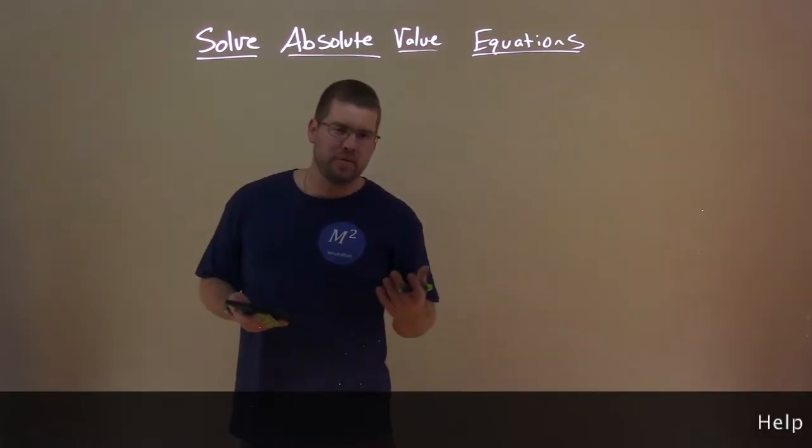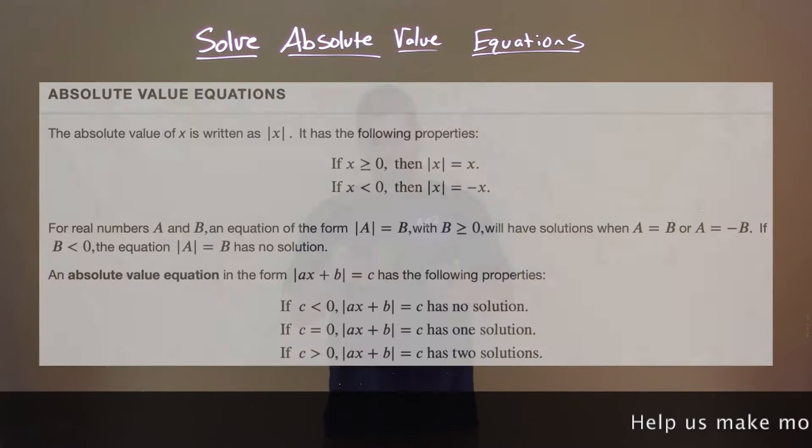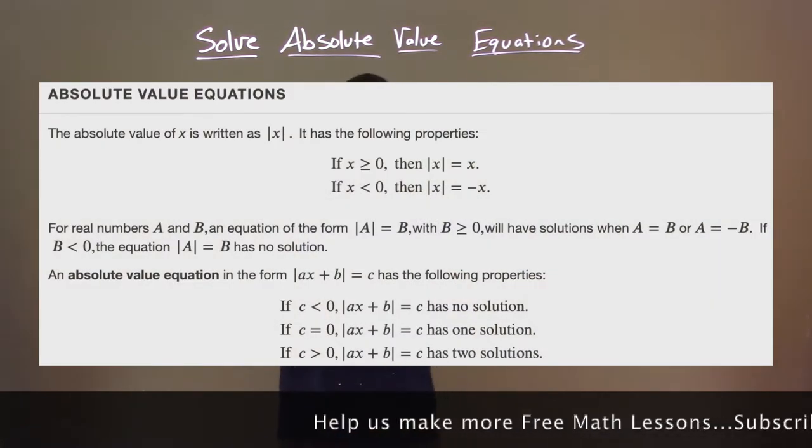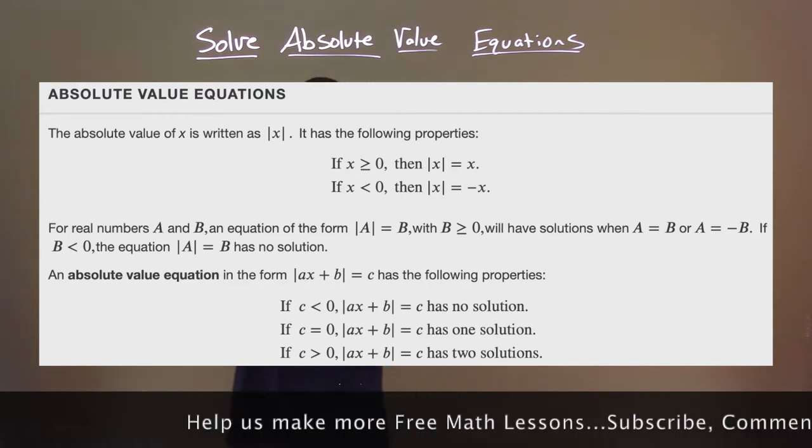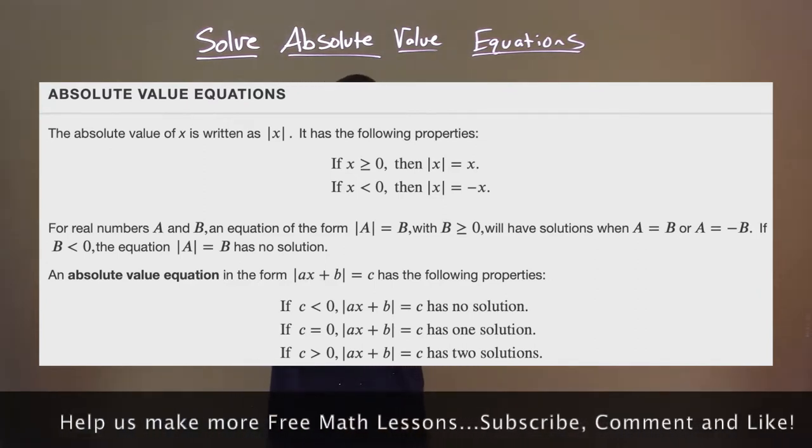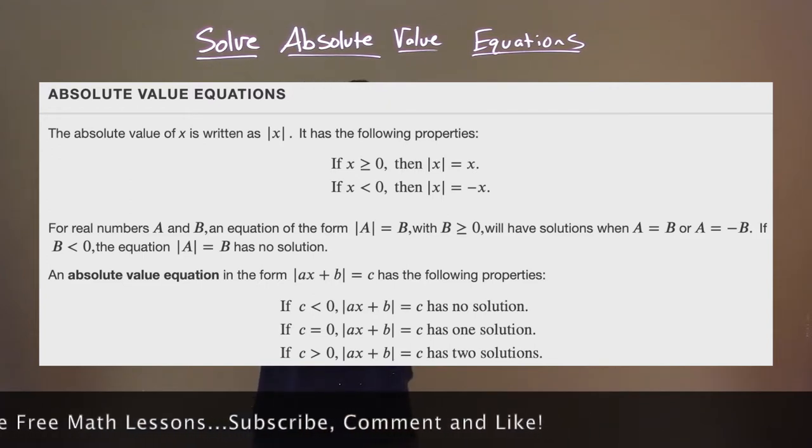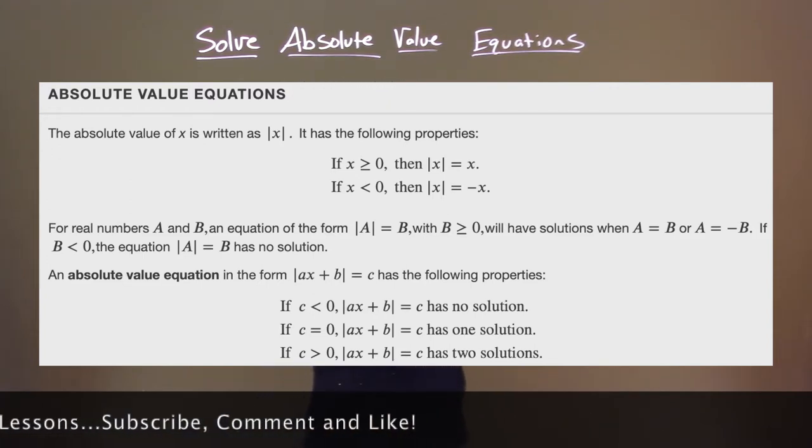So what is an absolute value equation? The absolute value of x is written as two bars around x. It has the following properties. If x is greater than or equal to zero, then absolute value of x equals x. If x is less than zero, then absolute value of x equals negative x.